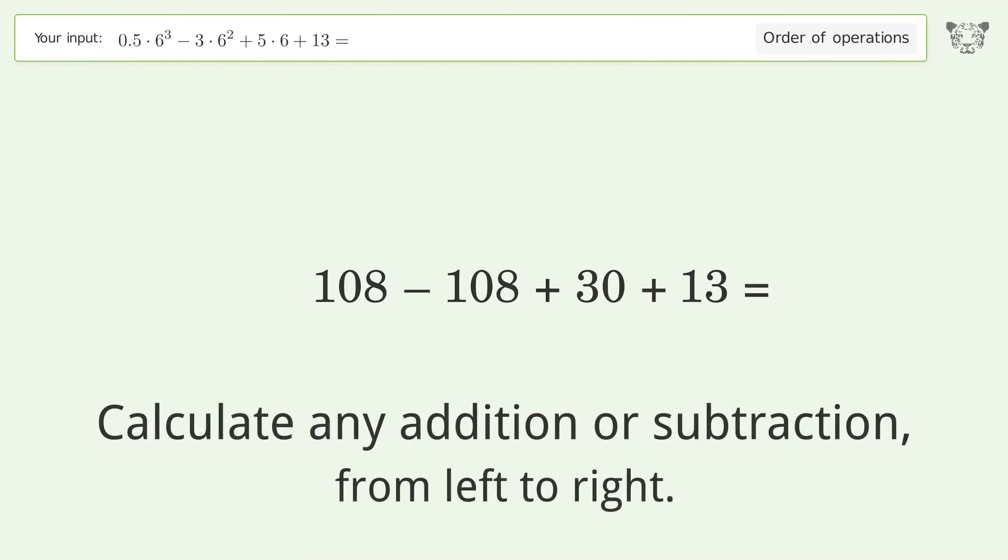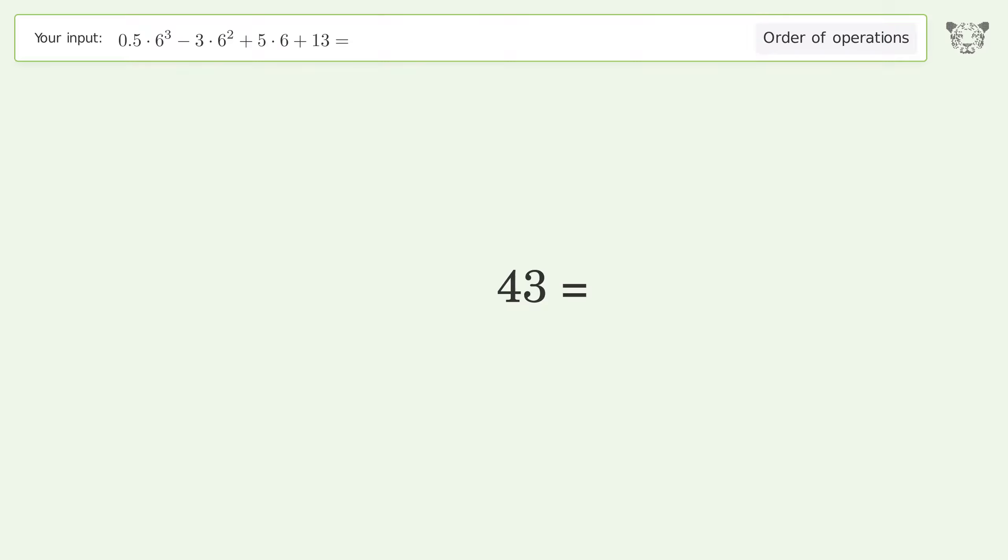Calculate any addition or subtraction from left to right. 108 minus 108 equals 0. 0 plus 30 equals 30. 30 plus 13 equals 43. And so the final result is 43.